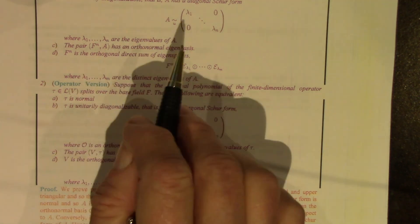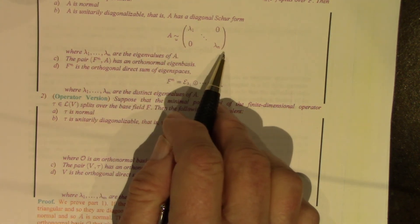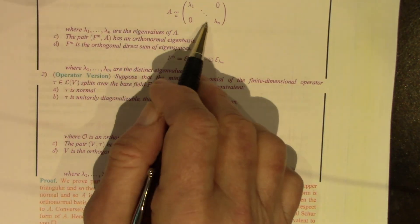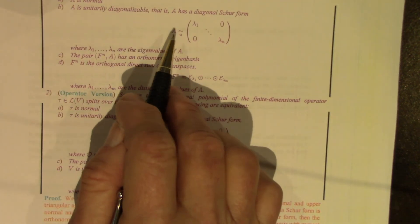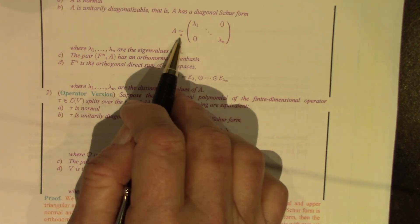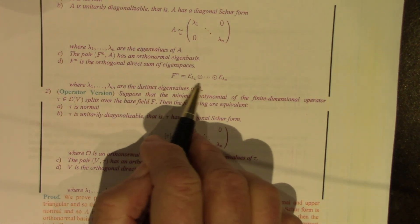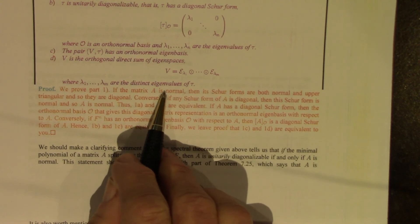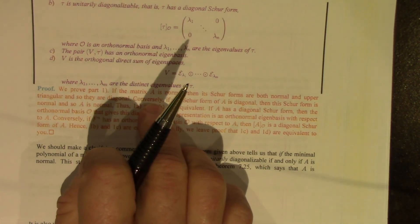Also, FN of A has an orthonormal eigenbasis — that's the basis that gives us this diagonal matrix. It's orthonormal because the change of basis to go from A to this diagonal matrix is a change from the standard basis to another orthonormal basis, since this is unitary similarity. FN is the orthogonal direct sum of eigenbases. This is the operator version, which I will let you read for yourself, and it would be great practice to fill in the proof without reading it first.